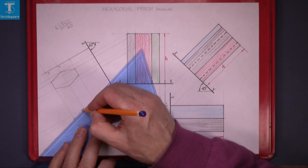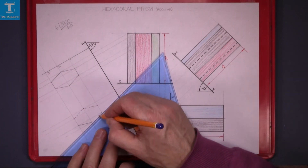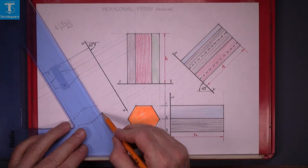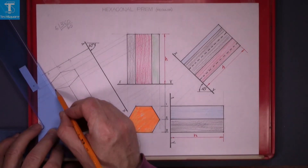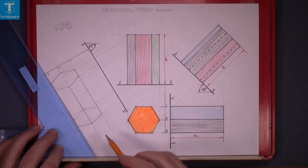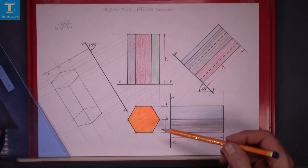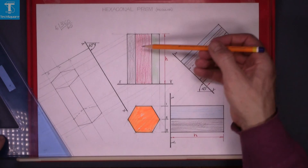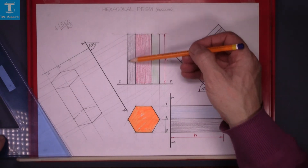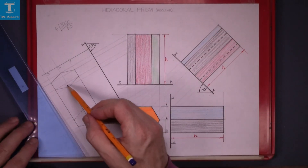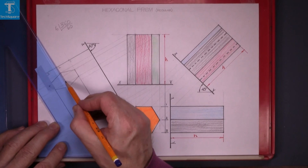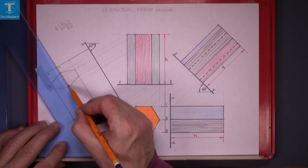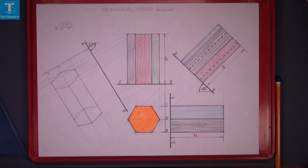Those dotted lines there are hidden — you cannot see those. There's one back line that cannot be seen at the very top, so it will be a dotted line along there. And that's your drawing complete.